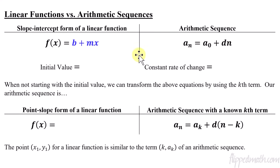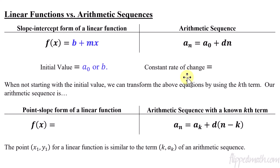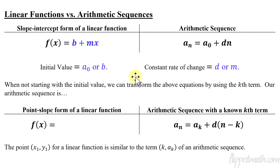I just switched around the mx and the b since it's just addition — you can do that because it makes it look very similar to the arithmetic sequence. They are very, very similar. The initial value: we start off with a_naught, and here the initial value would be your y-intercept. So we have either a_naught or b for our initial values. The constant rate of change for an arithmetic sequence is the common difference d, and over here it's the slope m. So you can see how linear functions match up with arithmetic sequences.